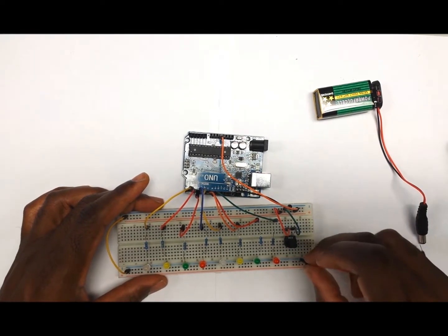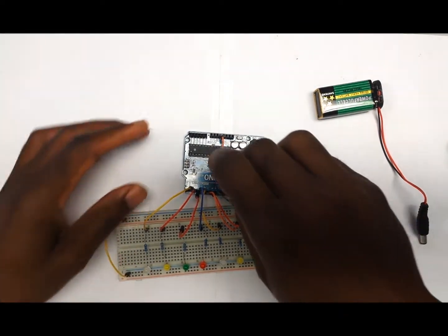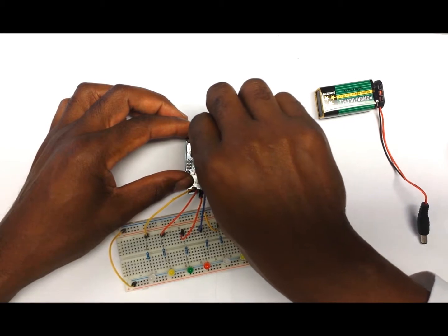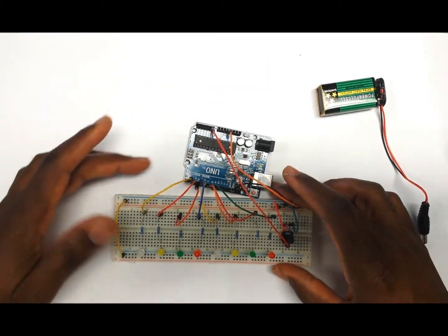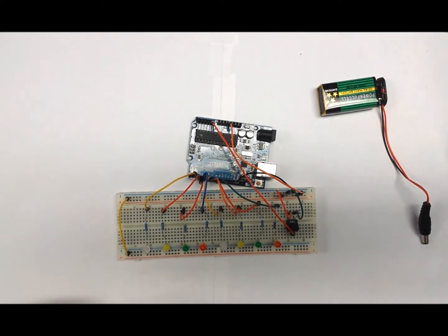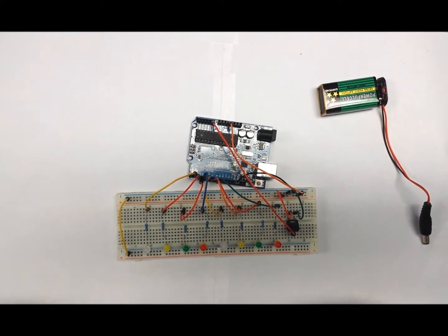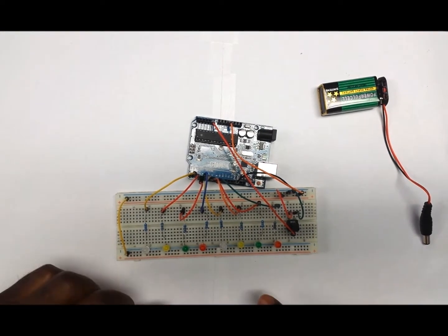Now we're going to have one wire that is coming from the center pin of the potential meter going to analog zero on the breadboard. This completes the wiring up of the flowing lights with a potential meter, so the next thing is you go onto my website and upload the code for this project.